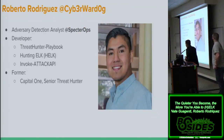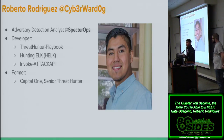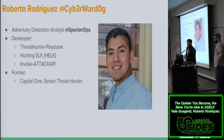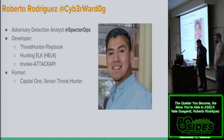My name is Roberto Rodriguez. I work for SpecterOps. I'm the author of a couple of projects on GitHub — for example, 300 playbooks, the Hunting ELK, and also the Invoke-ATTACK API, which moves data from the MITRE ATT&CK framework database and presents it in a more meaningful way. I'm a former senior SOC analyst for Capital One, where I started doing a lot of development of their hunting engagements.